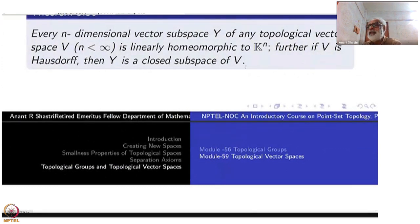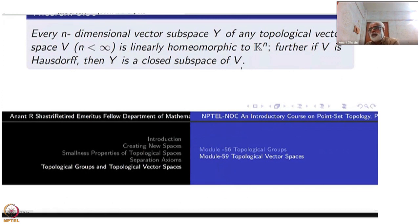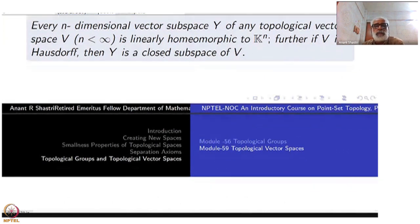For instance, you can always take the indiscrete topology on any topological vector space. Then the only closed subspaces will be the empty set and the whole space. So it is easy to see that the Hausdorff condition is necessary here.